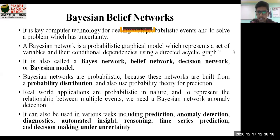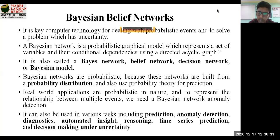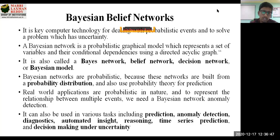A Bayesian Belief Network is also called a belief network, decision network, or Bayesian model. The name itself indicates it completely relies on Bayes' theorem. Bayesian networks are probabilistic because they are built from a probability distribution and use probability theory for prediction. Whenever you are making decisions with an intelligent machine and facing uncertainties, we use this model.